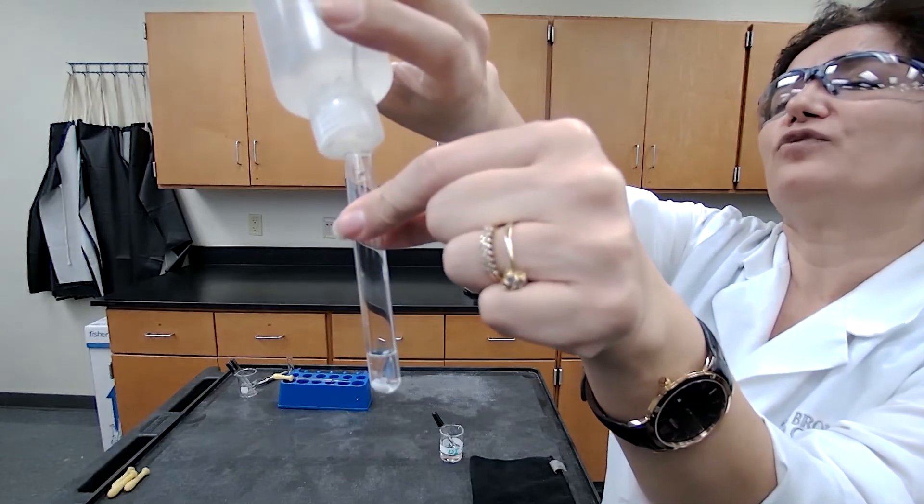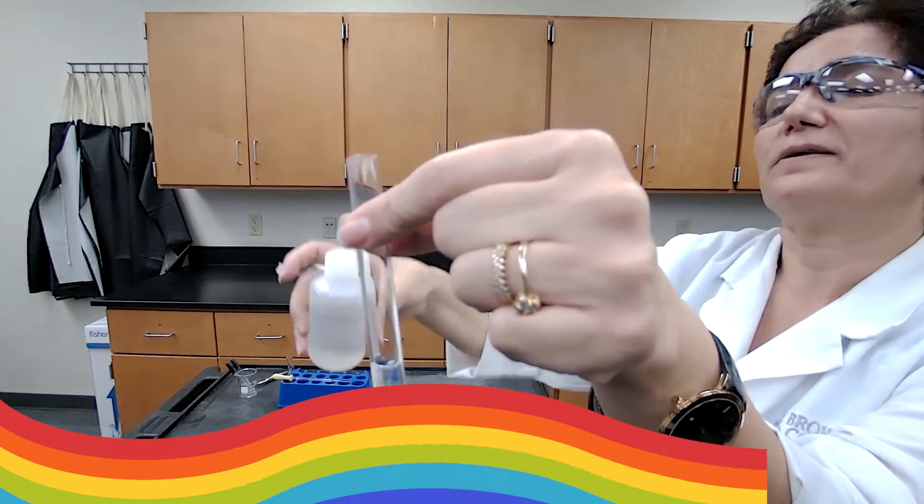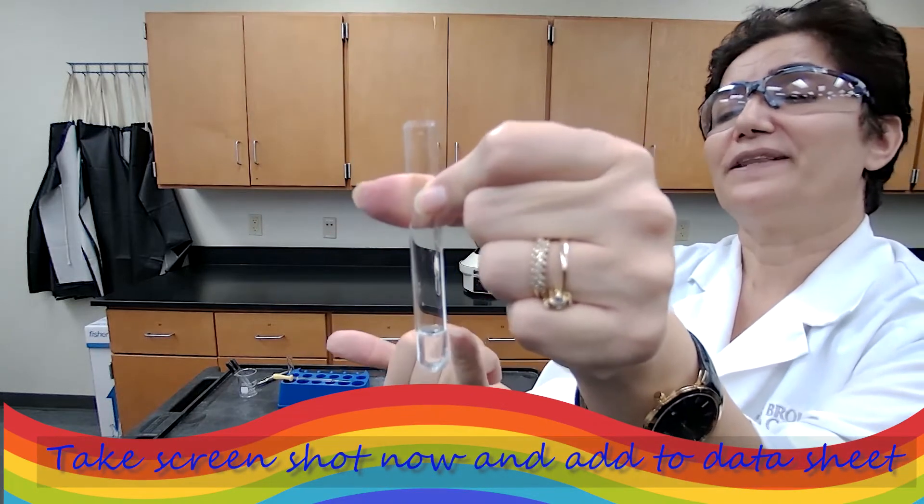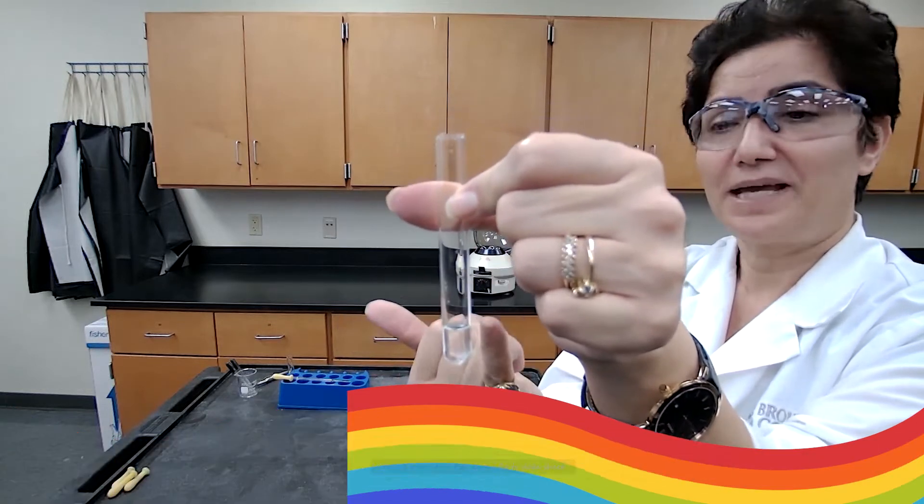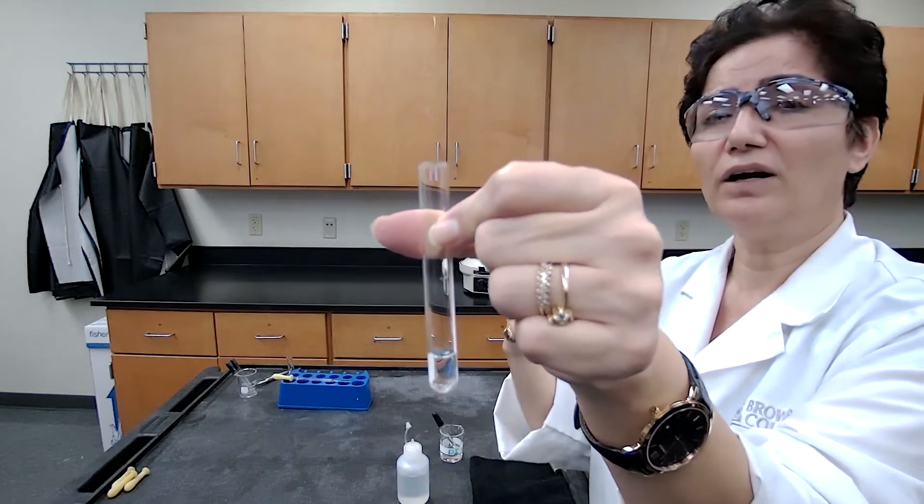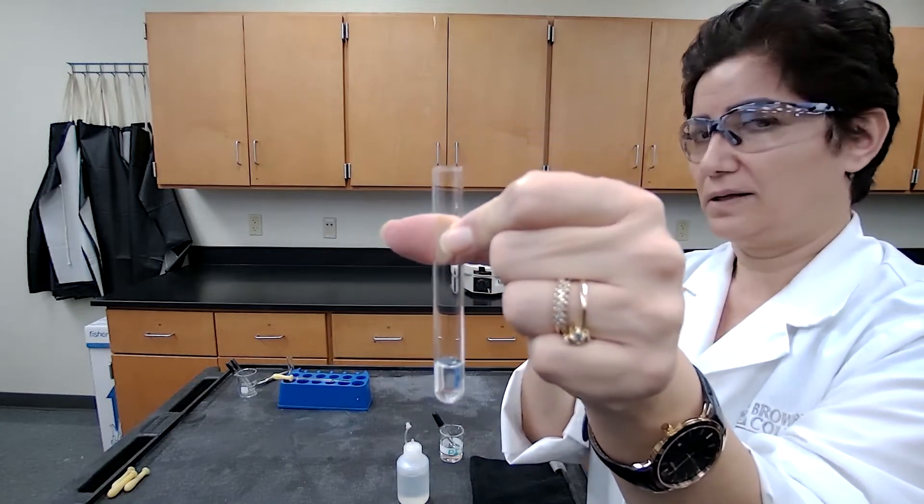If new precipitate forms, the clear solution would turn cloudy again. If it does not turn cloudy, that means the precipitation is complete and the amount of HCl I added earlier was enough.